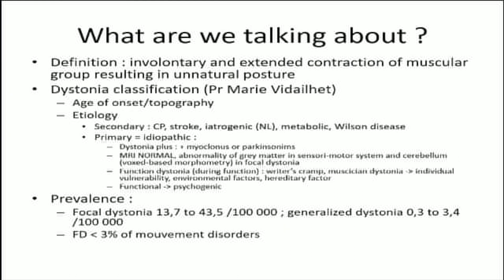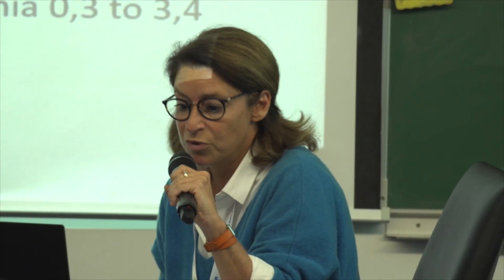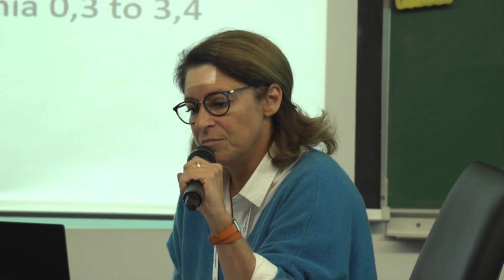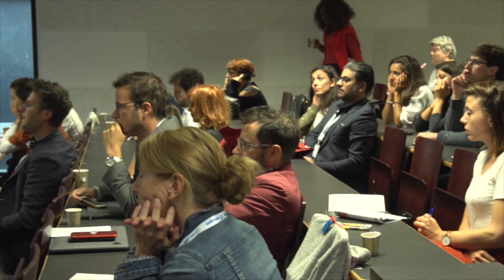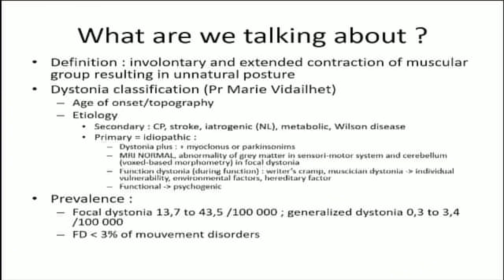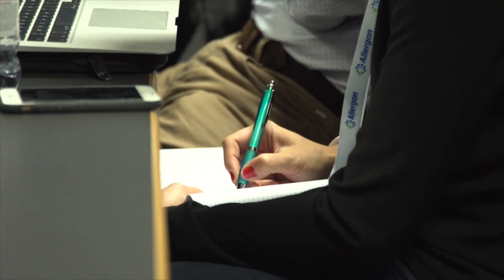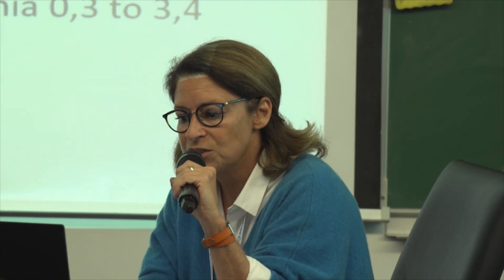We distinguish secondary and primary dystonia. Secondary dystonia can be observed after cerebral palsy, stroke, deep midbrain lesions, particularly with iatrogenic neuroleptic treatments, metabolic and mitochondrial causes, and in Wilson disease. If there is no secondary cause, we talk about primary or idiopathic dystonia. There are some dystonias with additional signs like myoclonus or Parkinsonism, classified as dystonia-plus. In primary dystonia, MRI is normal in all cases, but in certain voxel-based morphometry studies in focal dystonia, we can observe abnormality of gray matter in sensorimotor systems and cerebellum.